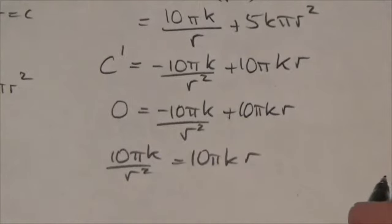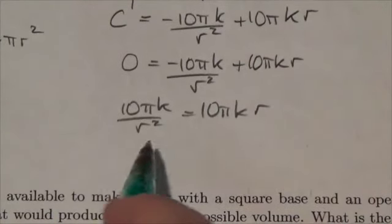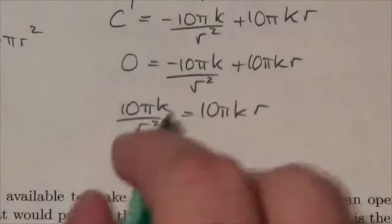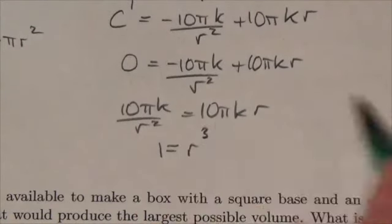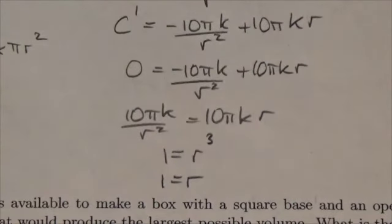Now, I hope you're seeing as well as I am that the 10πk, because those are all constants, are going to disappear here. I've got 1 over r². This is going to lead me to make this 1 over r³, which just simply tells me r is equal to 1.